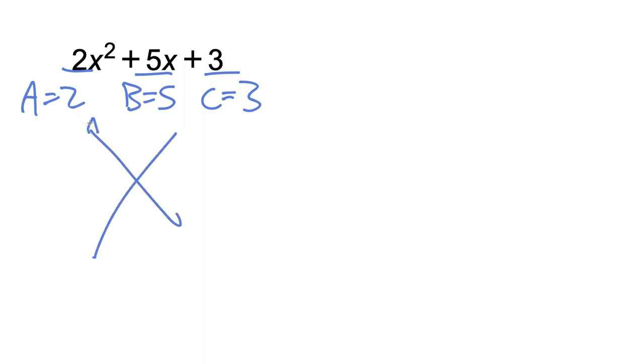We make the magic X. We're going to put AC up here. The product of A and C is 2 and 3. 2 times 3 is 6. The B term is 5. So now what we have to do is figure out what multiplies to give me 6. The product will be 6, the sum will be 5, and I think that's a 2 and 3 combo, because 2 times 3 is 6, 2 plus 3 is 5.